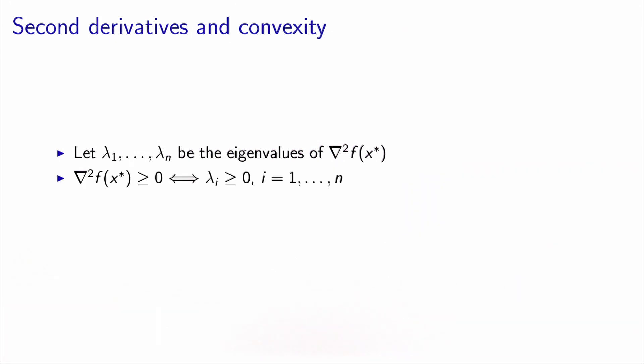The fact that the Hessian is positive semi-definite means actually that all the eigenvalues are non-negative. And the eigenvalue, as we have seen, is representing the curvature of the function along the corresponding eigenvector.